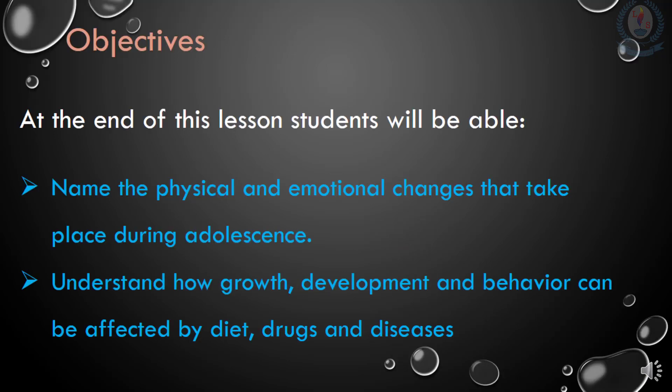Here are the objectives of today's lesson. At the end of this lesson, students will be able to name the physical and emotional changes that take place during adolescence, and also students will be able to understand how growth, development and behavior can be affected by diet, drugs and diseases.